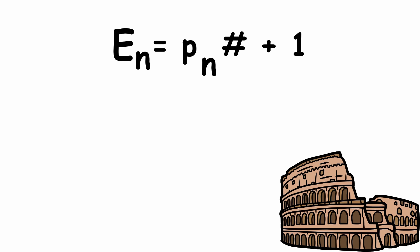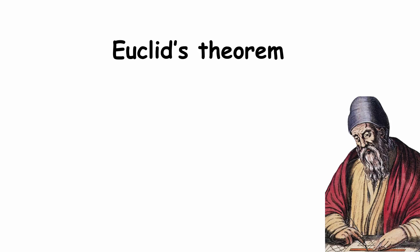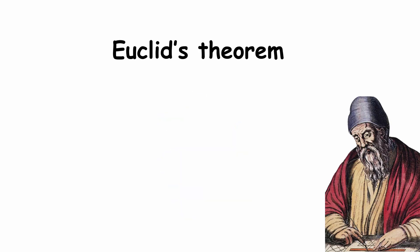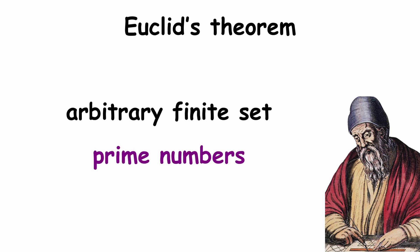These numbers are named after the ancient Greek mathematician Euclid, in reference to Euclid's theorem, stating that there are infinitely many prime numbers. It is a common misconception that Euclid explicitly referred to primordials in the proof of his theorem, but in actuality, his proof merely began by considering any arbitrary finite set of primes.